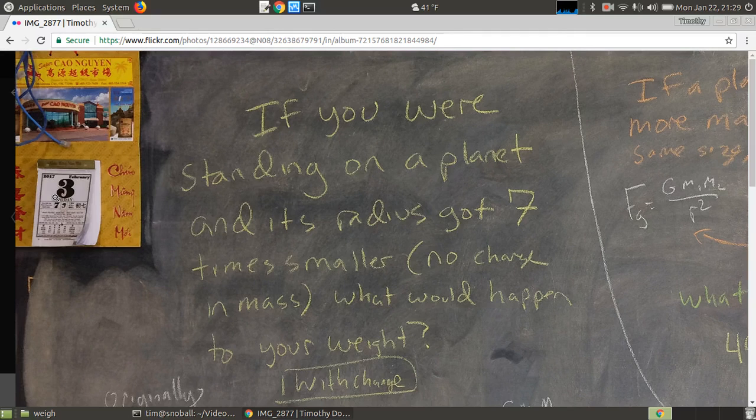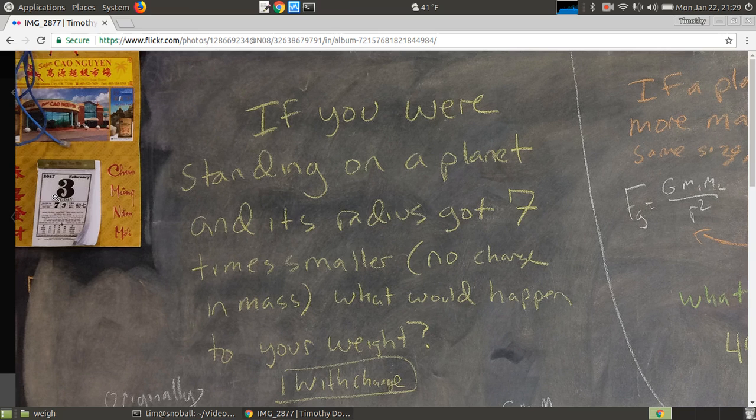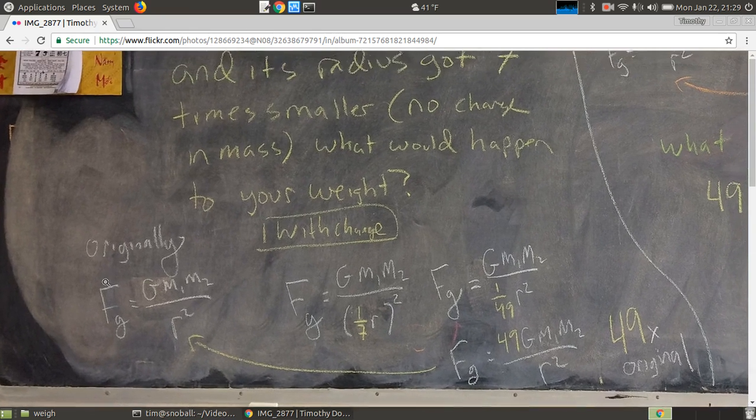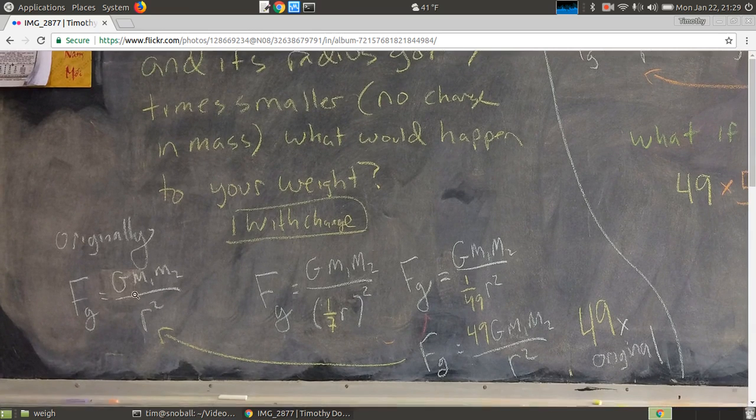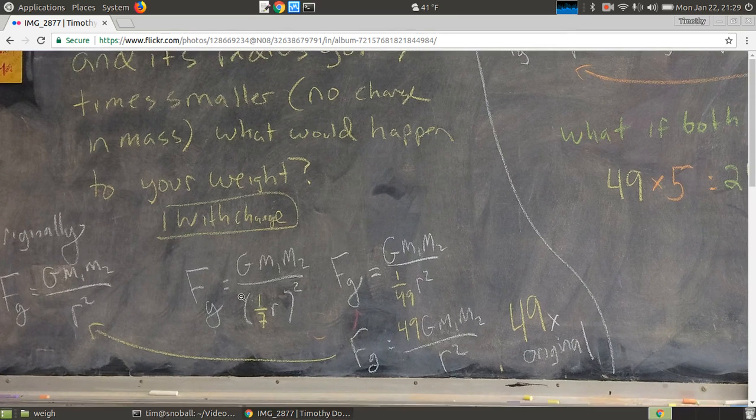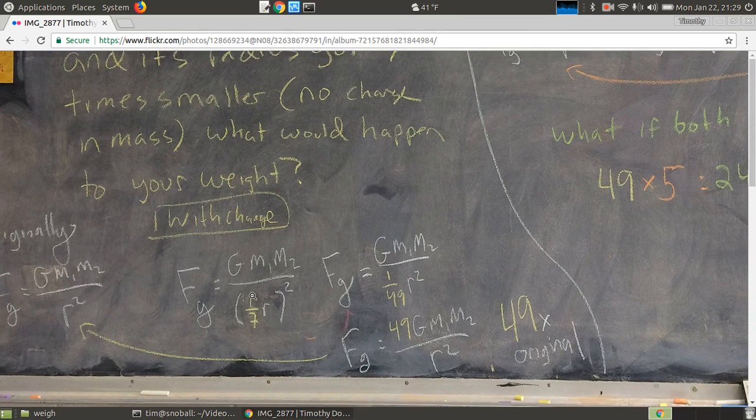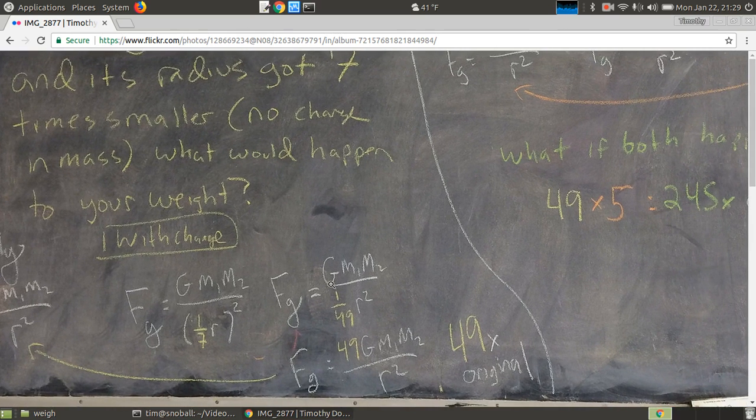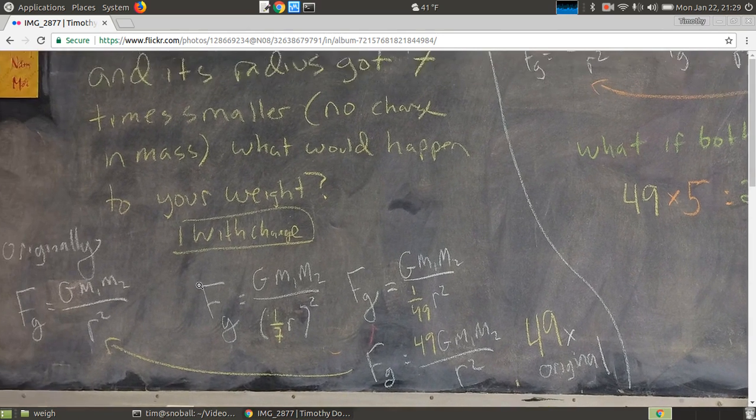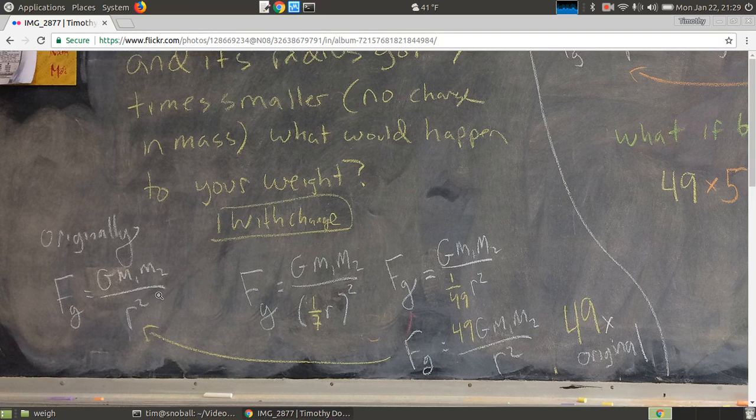I think the mathematically simplest way to do this is to plug in the factor you change by into the equation. I want to show you what I mean. So in this case, if you're standing on a planet and suddenly its radius got seven times smaller, what would happen to your weight? Easiest way to figure this one out is that whatever your weight was, it was originally GM1M2 over r squared. After this change, everything has remained the same except for the radius, which is now a seventh of what it was before. If you then simplify that down, it flips up to the top and you have 49 times GM1M2 over r squared, which is 49 times that. So your weight is now 49 times the original.